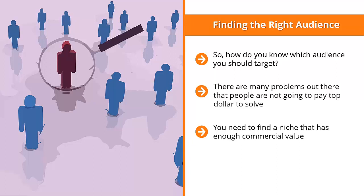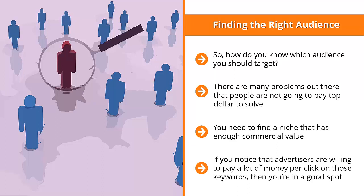One way to estimate commercial value is to use Google AdWords Keyword Planner and do cost-per-click research on keywords related to your niche. If advertisers are willing to pay a lot of money per click on those keywords, then you are in a good spot. Chances are there is enough commercial demand for that niche, and people are willing to pay a significant amount of money to solve problems related to it.